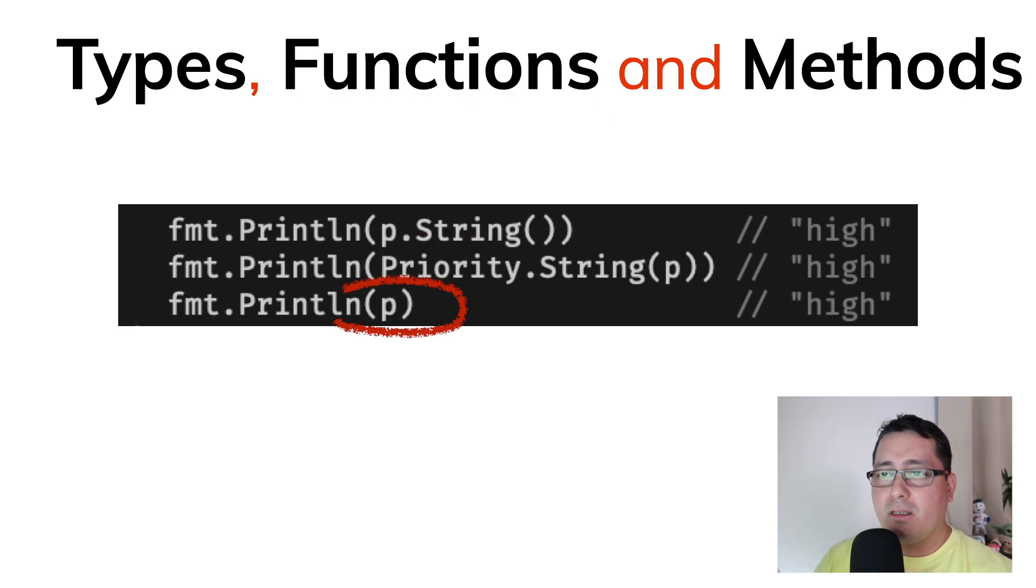And last one, we have this thing called println p that doesn't really indicate anything, and if you are familiar with the fmt package when we are using println, what it basically is trying to do is trying to find a way to print out the value to standard output, something that more or less represents the actual value of that type.